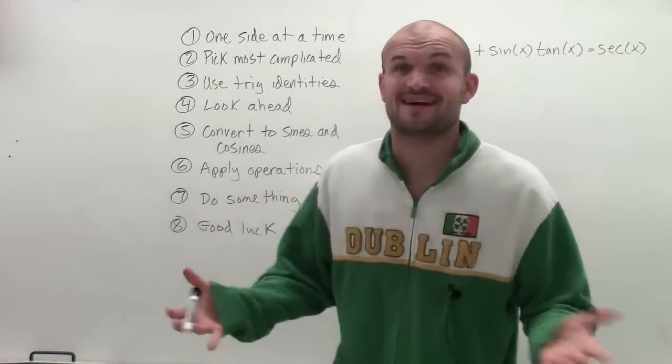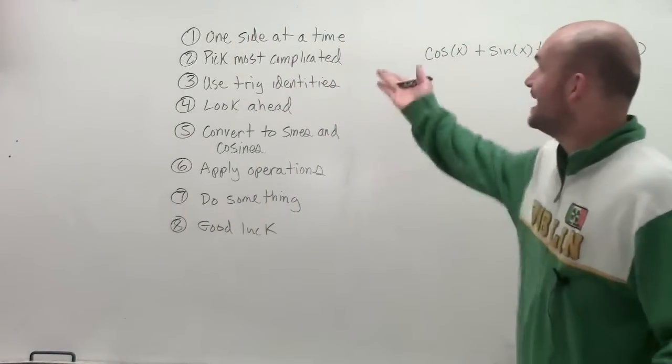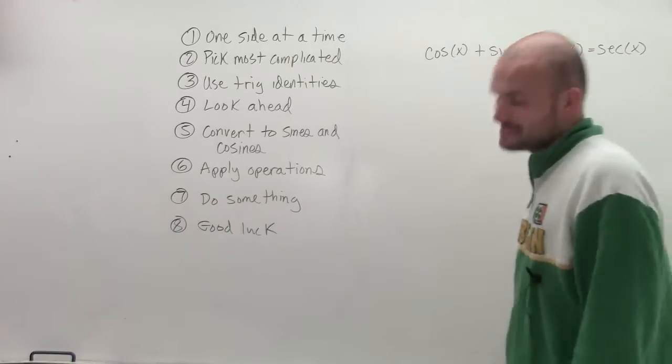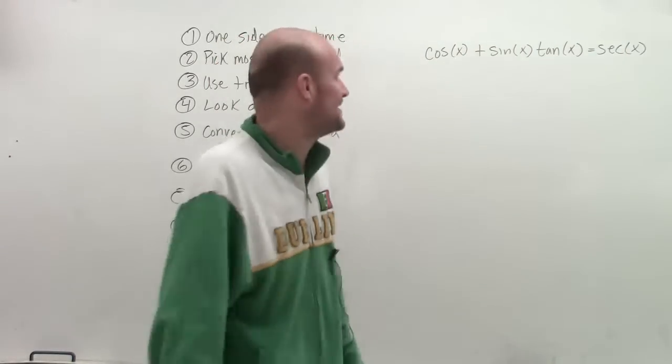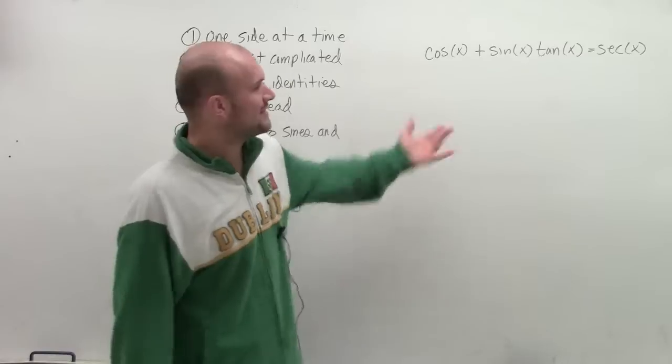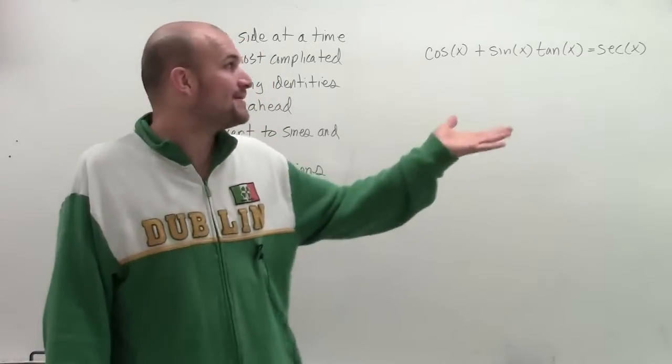Welcome. So here we're going to verify some trigonometric identities. And it says to pick one side, and then pick the most complicated. Now, a lot of times I say it's kind of here or there what's going to be the most complicated. I think we can kind of agree the left side is going to be more complicated than the right side.